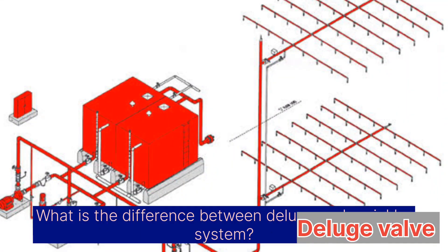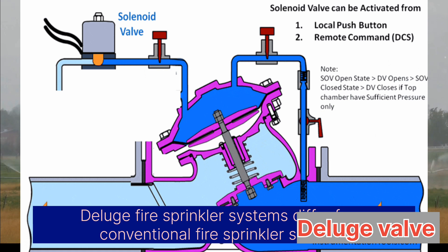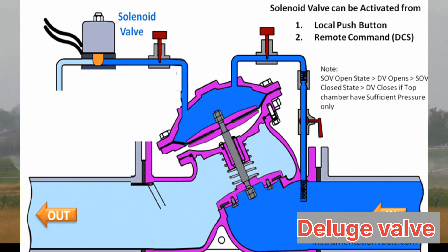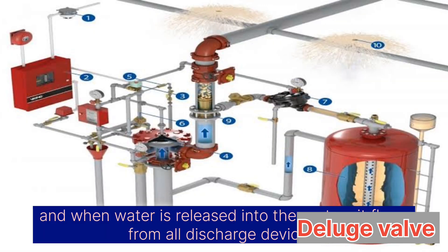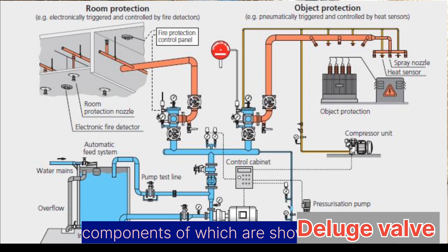What is the difference between a deluge and a sprinkler system? Deluge fire sprinkler systems differ from conventional fire sprinkler systems in the sense that all nozzles employed in the system are open, and when water is released into the system, it flows from all discharge devices. There are three main types of water deluge systems, components of which are shown below.